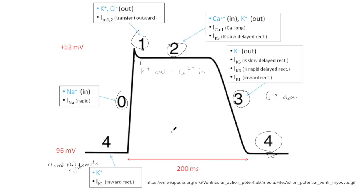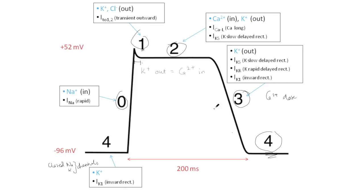After this we're back to phase 4, and we just cycle through those again in the order of phase 4, 0, 1, 2, 3 — and that's the ventricular myocyte potential.